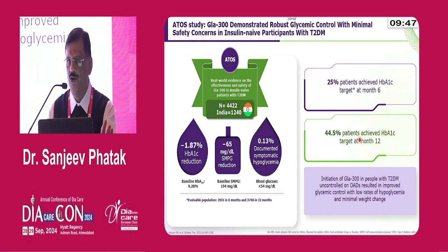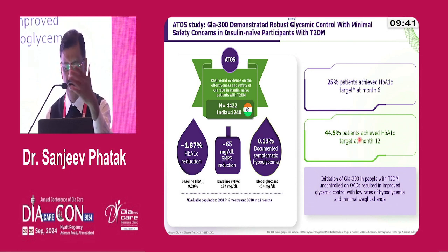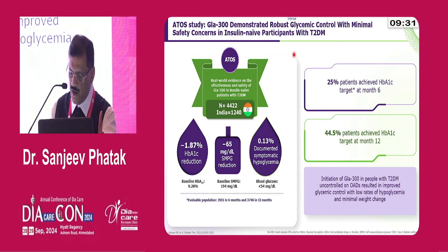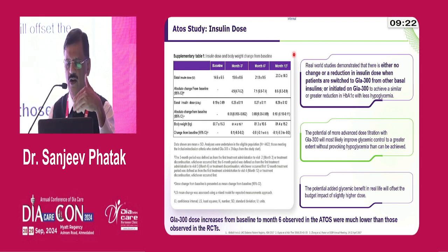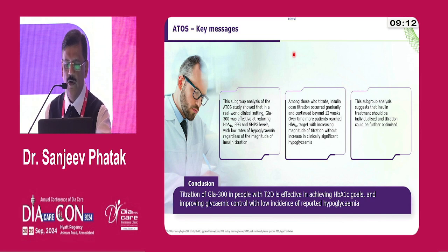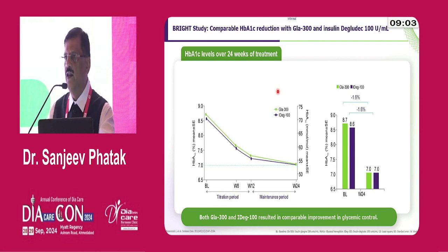45 percent achieving target is still a very good number — not everyone achieves target just by insulin initiation; you may need to intensify or add a GLP-1 analog. In this study, the dose of insulin was almost the same compared to glargine U100, not much higher. The key message from ATTO was that titration of glargine U300 in people with type 2 diabetes is effective in achieving A1c goals and improving glycemic control with low incidence of reported hypoglycemia.